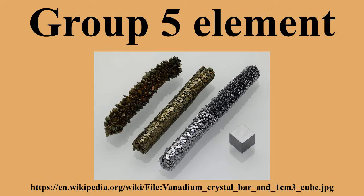There are 20 parts per million of niobium in the Earth's crust, making it the 33rd most abundant element there. Soil contains on average 24 parts per million of niobium, and sea water contains 900 parts per quadrillion of niobium. A typical human contains 21 parts per billion of niobium. Niobium is found in the minerals columbite and pyrochlore. There are 2 parts per million of tantalum in the Earth's crust, making it the 51st most abundant element there. Soil contains 1 to 2 parts per billion of tantalum, and sea water contains 2 parts per trillion. A typical human contains 2.9 parts per billion of tantalum. Tantalum is found in the minerals tantalite and pyrochlore.